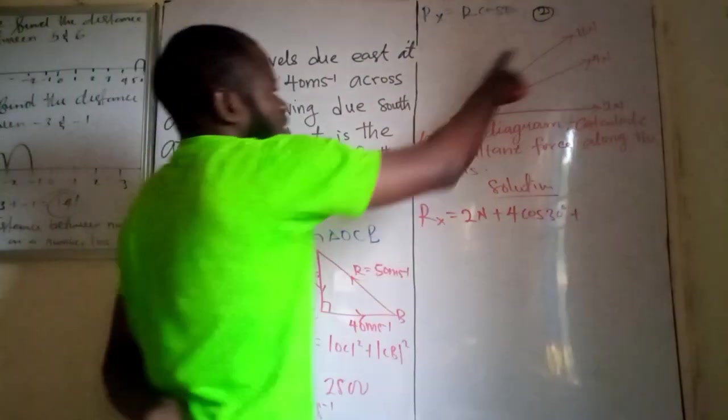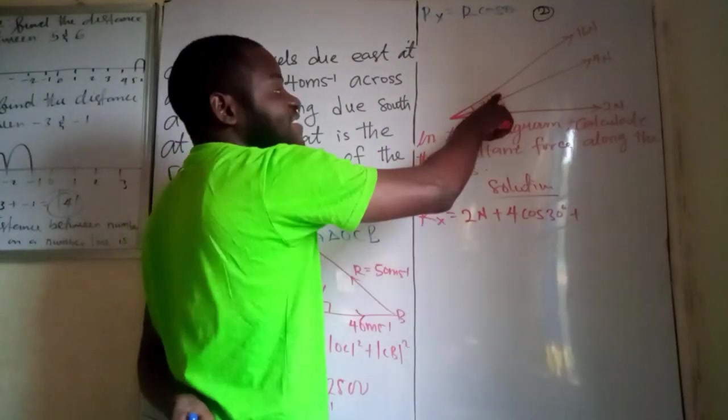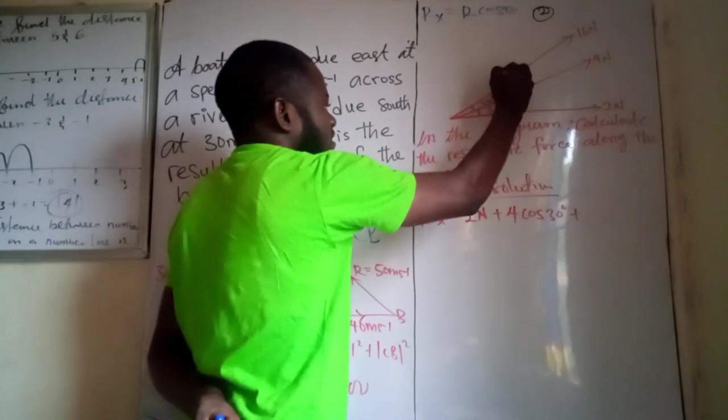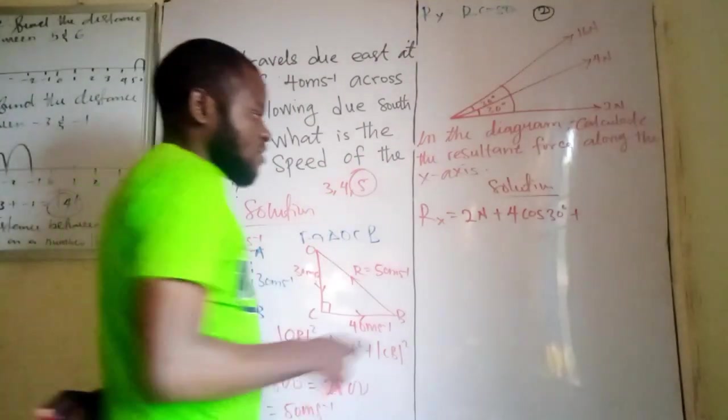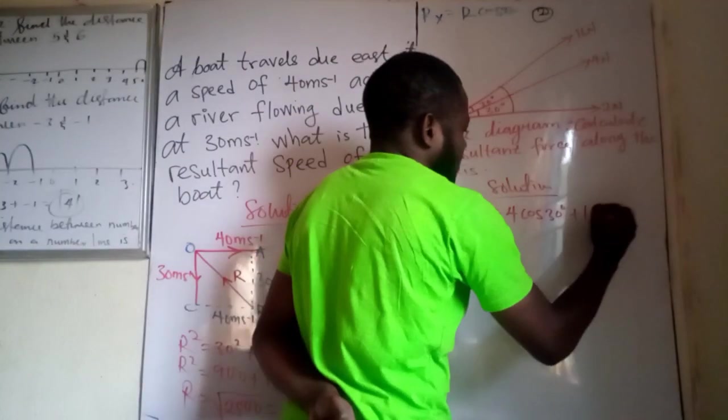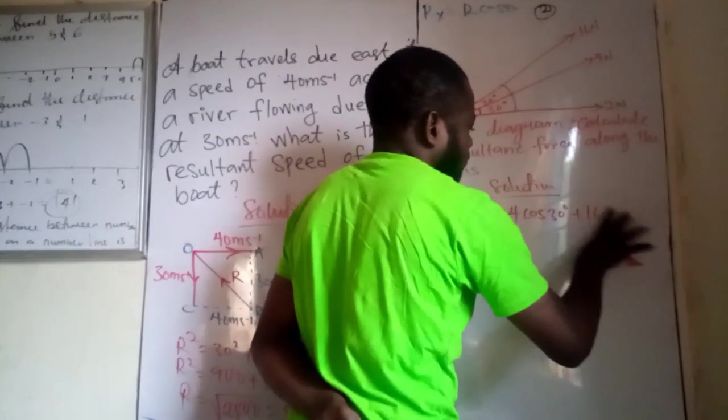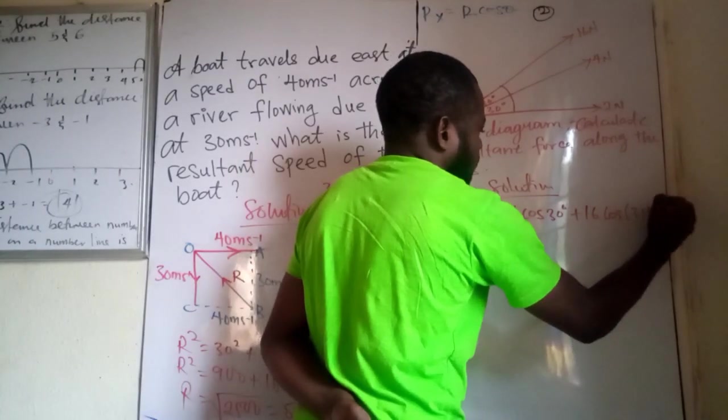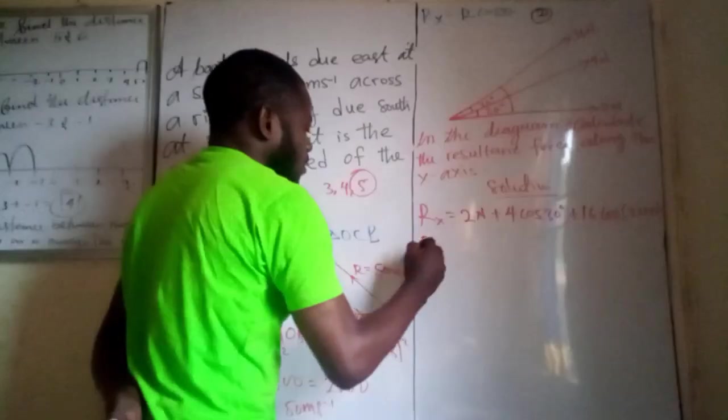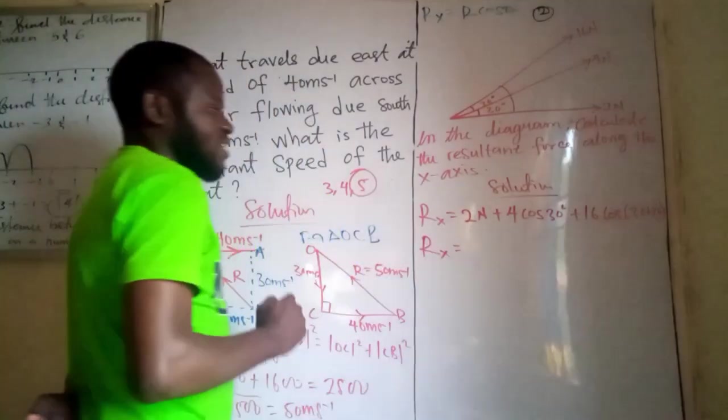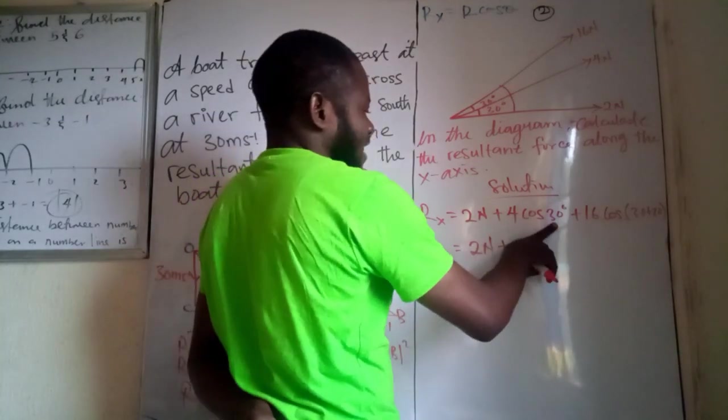Then, plus this one is 16 newton. But, the angle it's making with the horizontal, it's not 30 degrees. But, the entire angle here, that's 30 plus 30. That will give us 60. So, we have that 16 cos, 16 cos 30 plus 30. So, the resultant force along the horizontal component would then be 2 newton plus 4 cos 30.